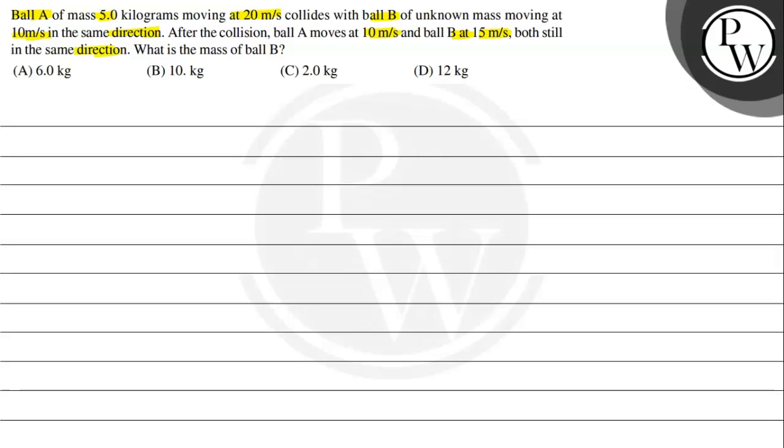What is the mass of ball B? The options given are: first one is 6 kg, second one is 10 kg, third one is 2 kg, and fourth one is 12 kg.